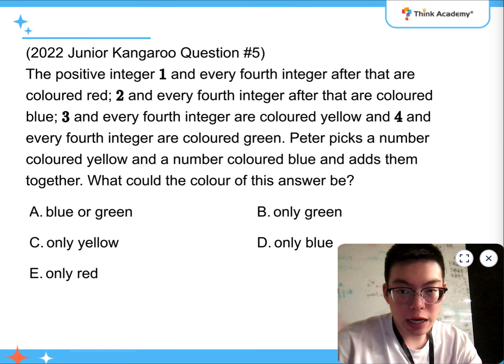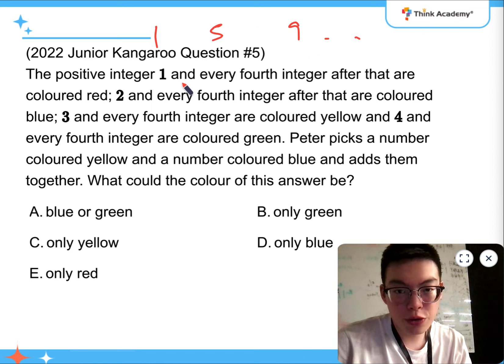And, question number 5. Positive integer 1, and every 4th integer are coloured red, which means 1, 5, 9, so on. 2, and every 1 blue, so 2, 6, 10, so on.